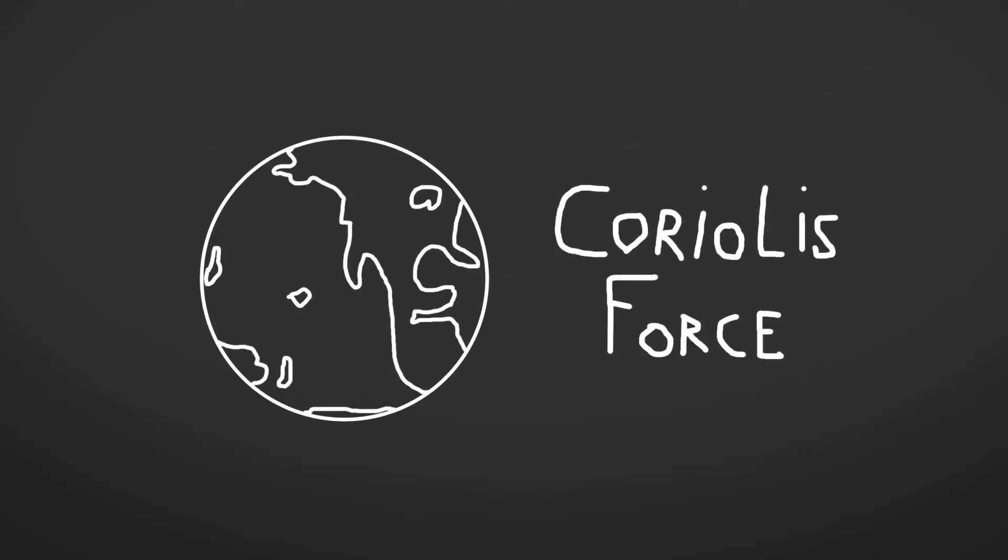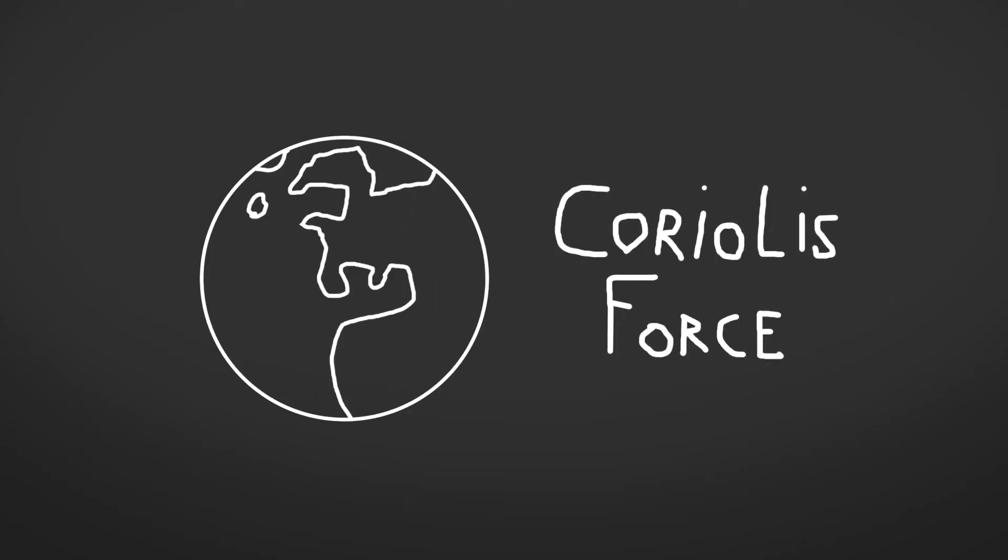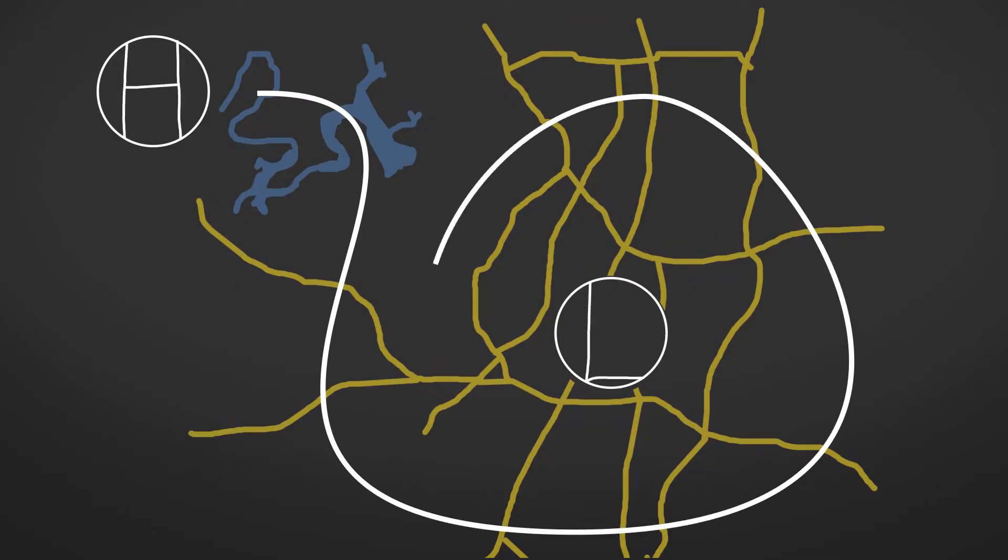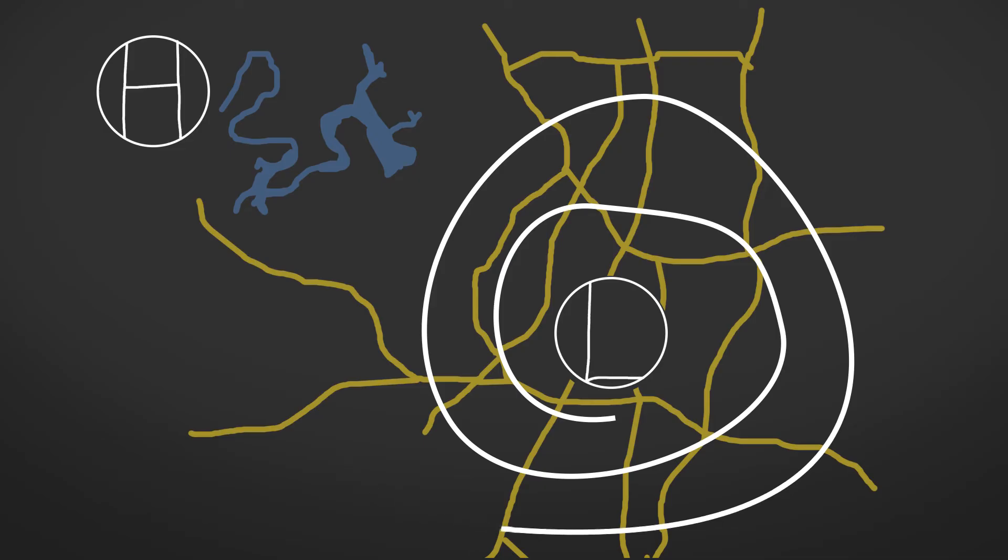Here's the complicating factor. On a rotating planet the Coriolis force comes into play which adds a spin into the mix. As the air is blowing from high to low back over Austin it's being deflected rightward since we're in the northern hemisphere.